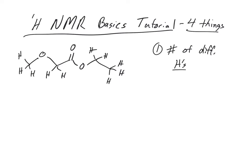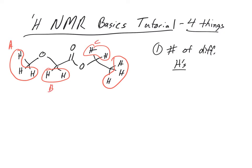You've got to be able to look at this molecule and say, are these hydrogens in a different chemical environment? It means are they near different things. These are all different hydrogens when I've circled them. We call this A, B, C, and D. So there are four different chemically non-equivalent hydrogens in this molecule.